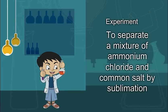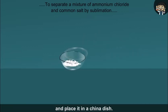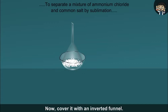To separate a mixture of ammonium chloride and common salt by sublimation. Take a mixture of common salt and ammonium chloride and place it in a china dish. Now cover it with an inverted funnel. Plug the open end of the funnel with cotton.